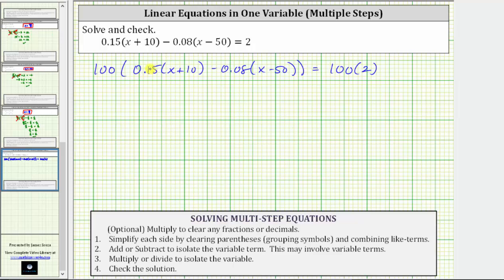And now on the left side of the equation, we will distribute the 100 to the first product as well as the second product. This will give us 100 times 0.15 times the quantity x plus 10 minus 100 times 0.08 times the quantity x minus 50 equals on the right side, 200.